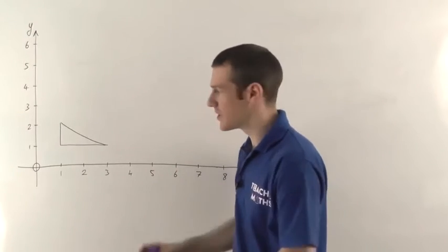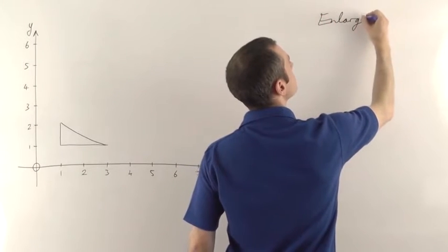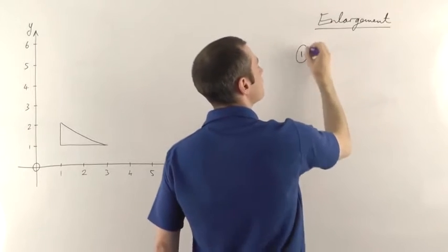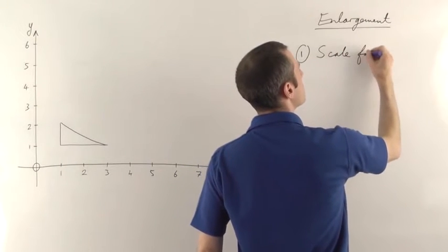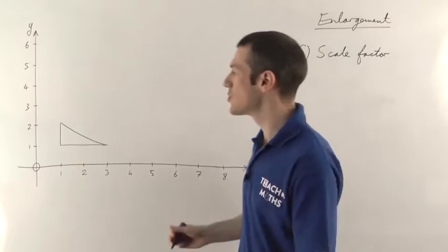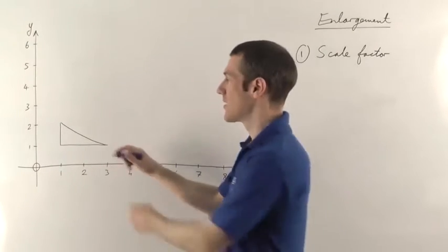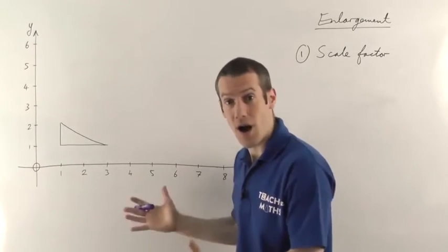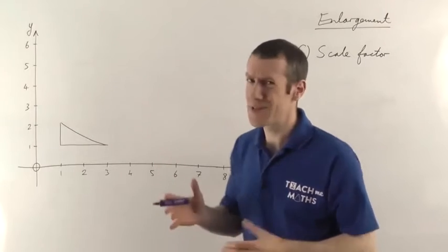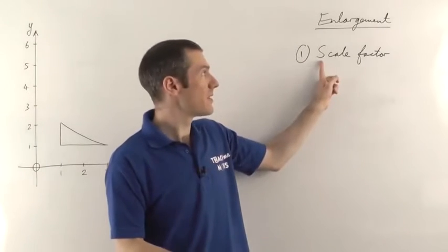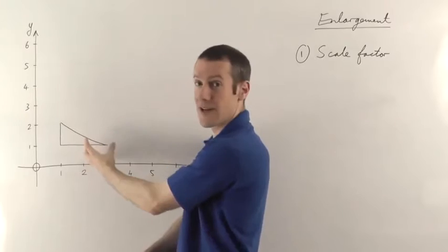In order to specify how you do an enlargement, there are a couple of things you need to say. First of all, you need to say what the scale factor is. The scale factor is how much bigger it gets, or possibly smaller. If the scale factor is 2, the triangle is going to get bigger and all the lengths will end up being twice as big. If the scale factor were 3, all the lengths would end up being 3 times as big. If the scale factor were a half, all the lengths would end up being half as big.